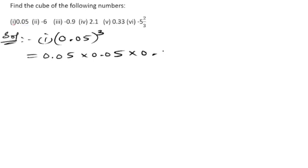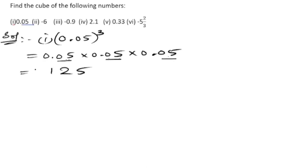Here the 5 is getting multiplied three times. First, we will multiply just ignoring the decimals: 5 into 5 — fives are 25, 25 into 5 is 125. We got 125. Now we will calculate how many digits are there after the decimal — there are two here, two next, two — so there are total six digits going after the decimal.